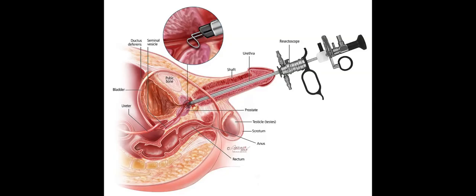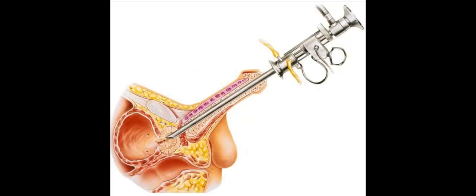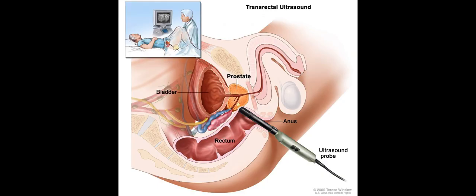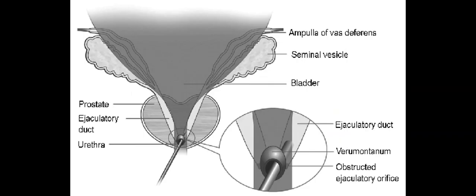Several useful aids can ensure that the resection is performed safely and completely. With an endoscopic needle, the milky ejaculatory duct fluid can be sampled transurethrally during the procedure and inspected with microscopy for sperm. The use of simultaneous real-time TRUS during the resection is a valuable addition to this procedure. The exact location of the lesion to be resected can be determined by TRUS and the depth of resection continuously assessed during the resection.